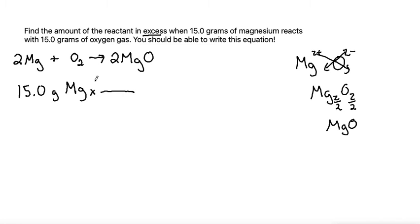Converting from grams to moles, we need to use the molar mass of magnesium. Looking up magnesium on the periodic table, I get its molar mass is 24.31. So the grams will go on bottom so it cancels. Moles goes on top so that we convert to the moles, and the molar mass always goes with the unit of grams because there's 24.01 grams in one mole of magnesium.